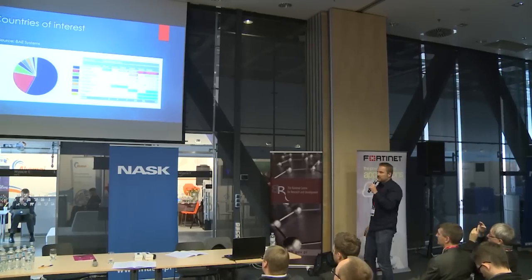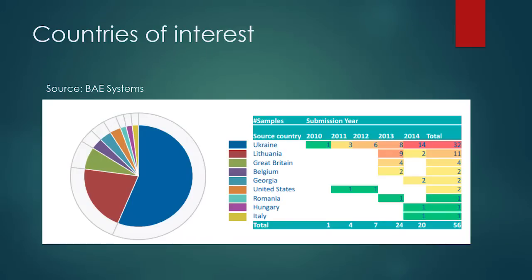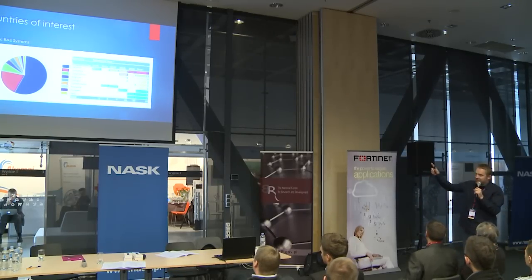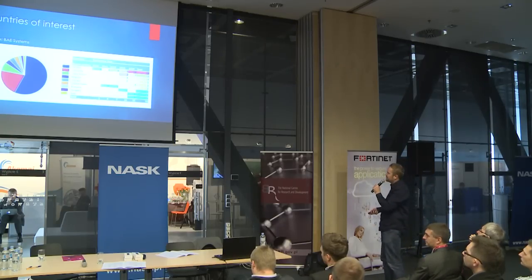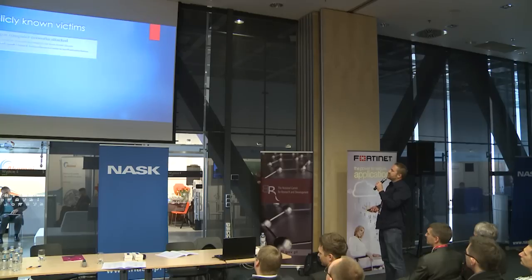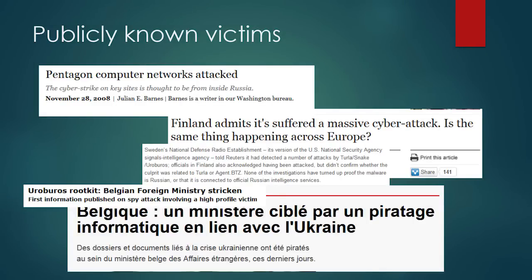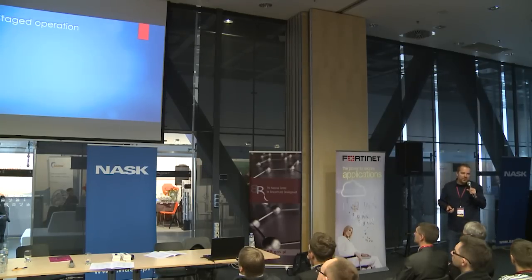What are the countries of interest? Based on the BAE Systems report, it's Europe — more concretely, Central and Eastern Europe. Strangely, Poland is not there, which I don't know why — maybe they just didn't submit anything to VirusTotal, since this is based on VirusTotal submitter countries. Publicly known victims include the Pentagon obviously, Finland, Sweden, and Belgium. The operation they perform is a staged operation — it's not like they come and immediately install Turla. There are multiple stages.